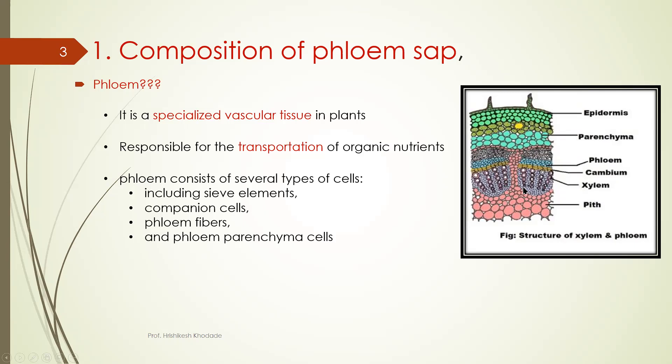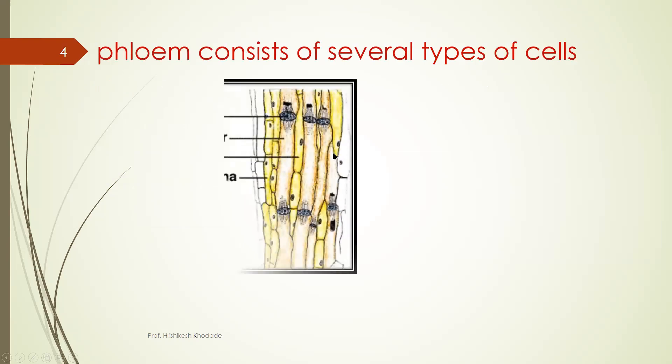Cambium role is for secondary growth in plant. That is not our topic. So we will restrict ourselves to the phloem. So phloem consists of several types of cells.